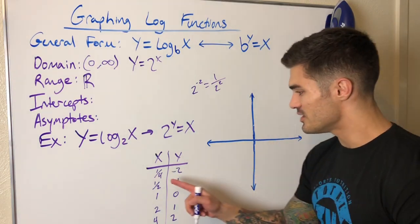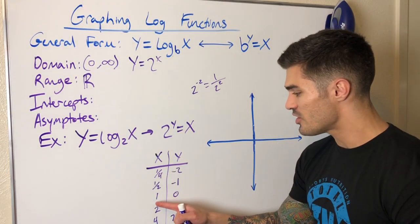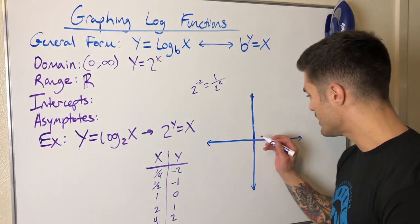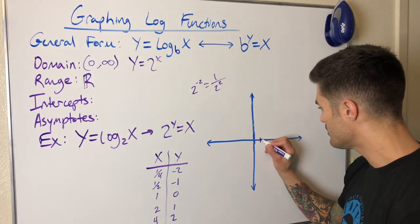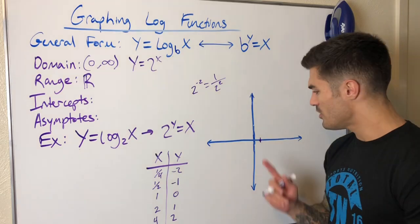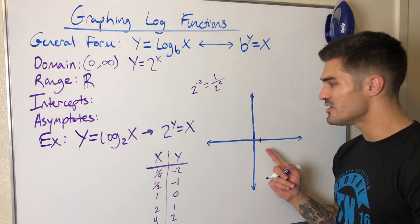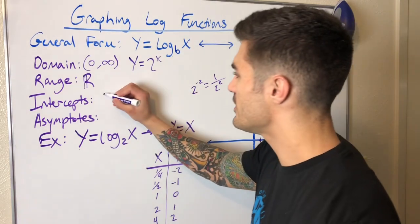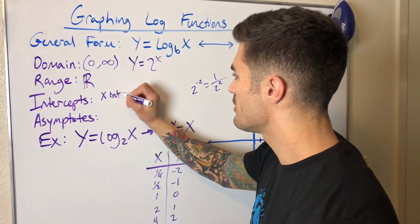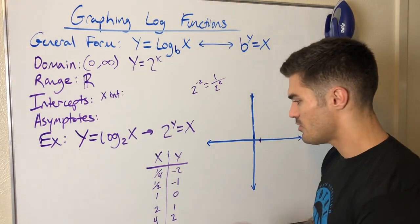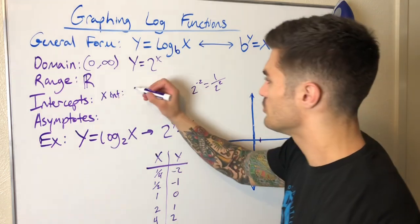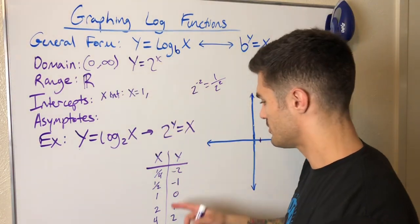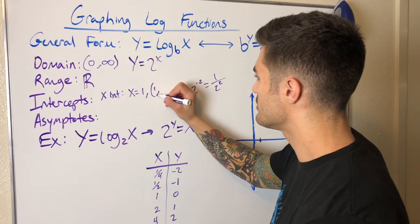Let's go ahead and graph this. I'll start at the point (1, 0) — x equals one, y equals zero. That's our x-intercept, where the graph intersects the x-axis. So we know we have an x-intercept at x equals one, or as a coordinate point: (1, 0).